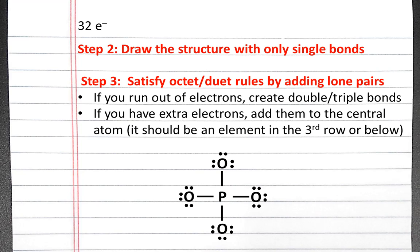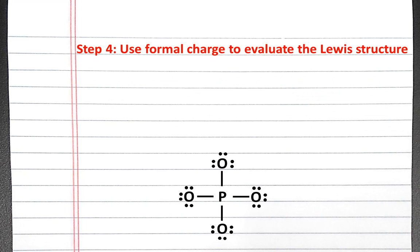We also see that the octet rule is satisfied for all atoms. Next, we'll want to use formal charge to evaluate the Lewis structure.